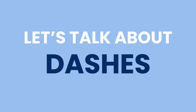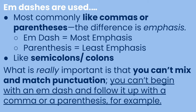Now we want to talk about dashes. There are many different types of dashes; however, the SAT specifically likes to test the em-dash. The em-dash most commonly behaves like commas or parentheses, and it can even behave like a semicolon or a colon. The real difference is that when you use an em-dash, you're adding emphasis — em-dashes add the most emphasis, while parentheses tend to add the least. What's really important is that you cannot mix and match punctuation — you can't open with an em-dash and close with a comma. The SAT likes to test this.